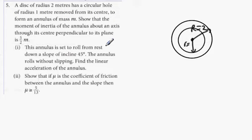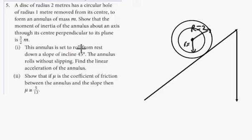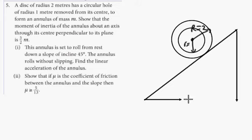It's set to roll from rest down the slope. The keyword is: if it says 'wedge,' the slope is movable. If it says 'plane' or doesn't specify it's a wedge, it's not movable. In this case, obviously the slope isn't movable.